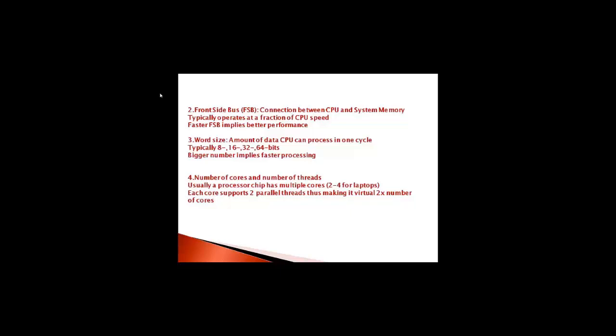Third is the word size, which is the amount of data that the CPU can process in one cycle. A bigger number implies faster processing. Fourth is the number of cores and number of threads. Usually, a processor chip has multiple cores. Each core supports two parallel threads, thus making it a virtual 2X number of cores.